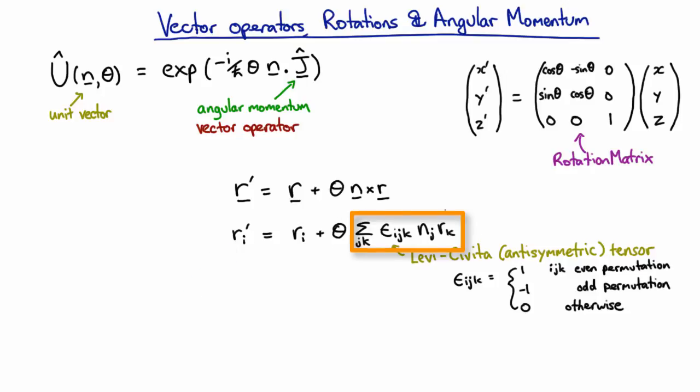We assume that summation is there even though we don't write it. This is called Einstein summation notation.